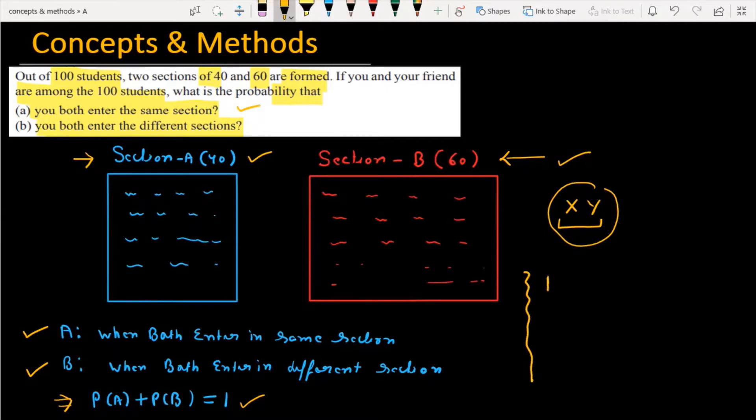Now, if you think about it, there are two cases possible. I am going to find out P(A), meaning we are going to find the probability of an event when both are in the same section. Generally, if I talk about P(A), then there are two possibilities. The formula is favorable event divided by sample space. That is the formula for the probability of any event.